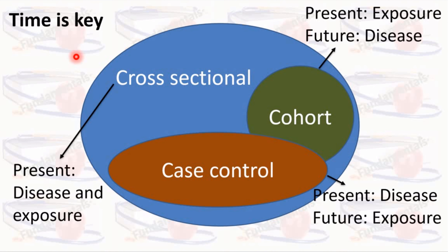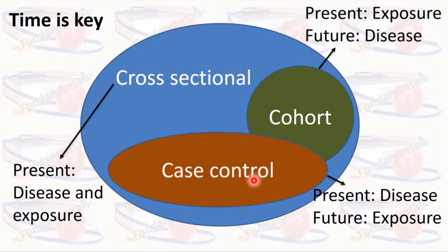The basic variable that defines a study design is time. If both the exposure and outcome are determined at the same point, it is a cross-sectional study. If the outcome has occurred and the researcher goes back from the outcome towards exposure, it is a case-control study. If patients are followed from the exposure towards the outcome, it is a cohort study or experimental study.